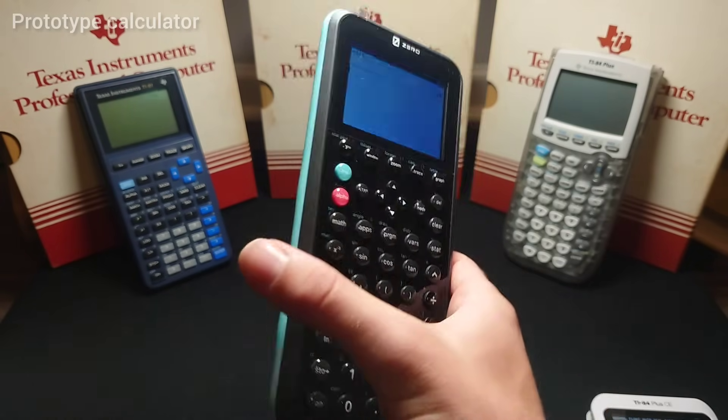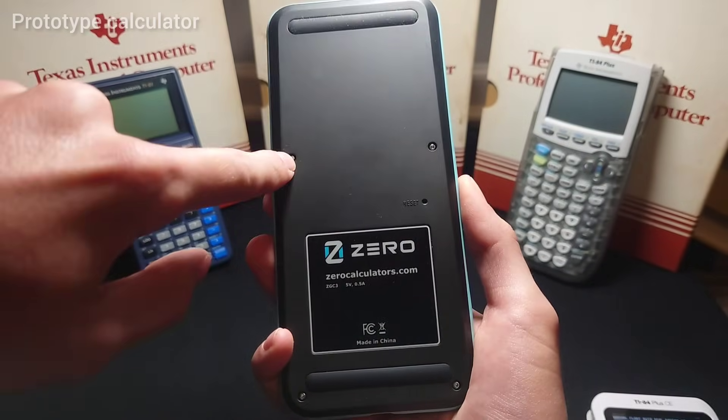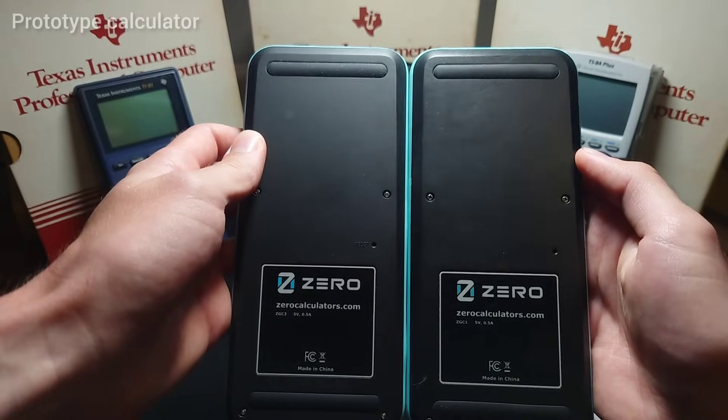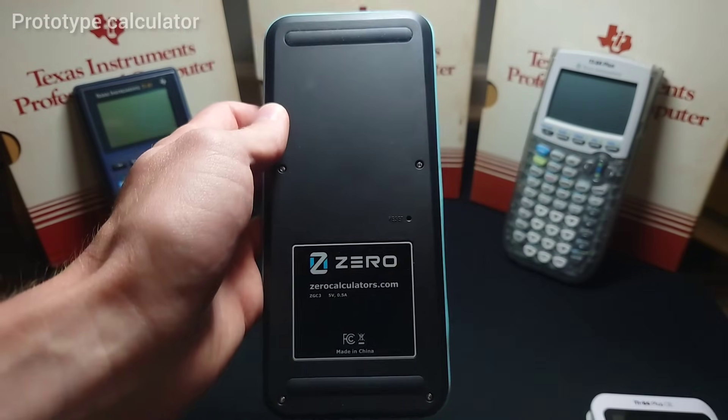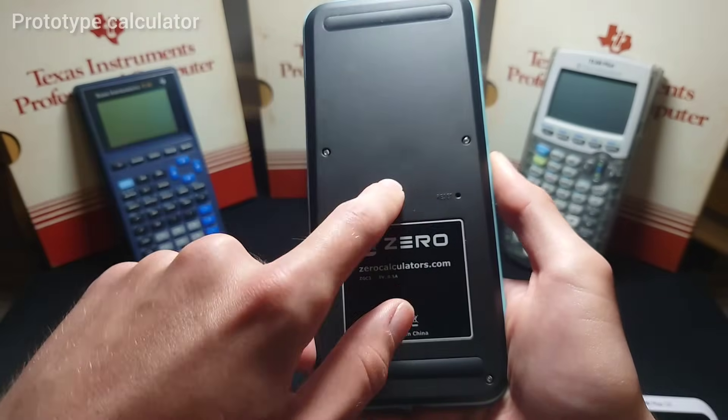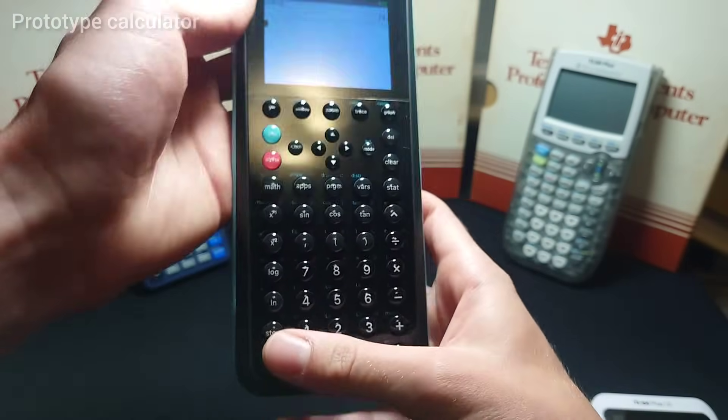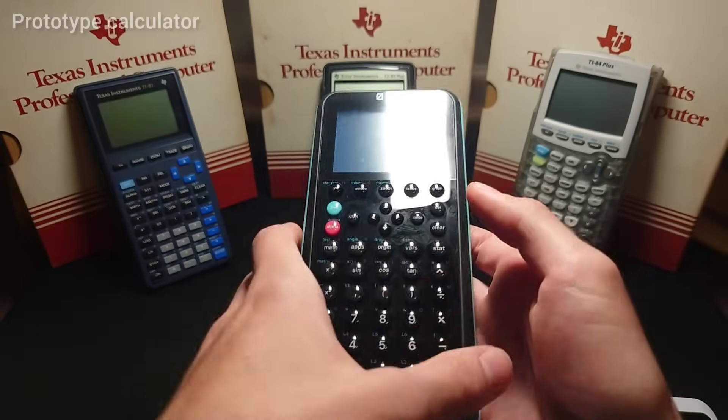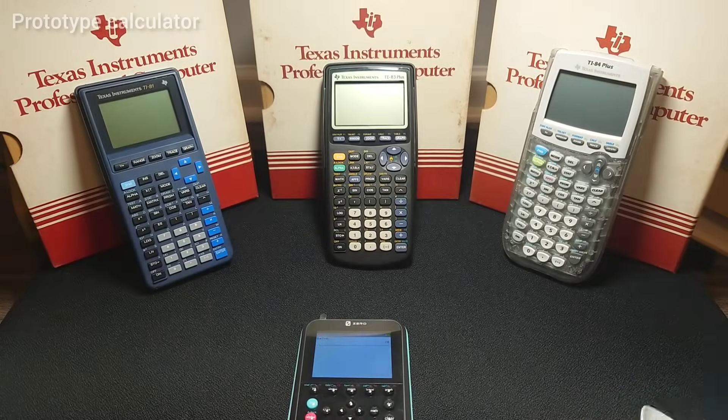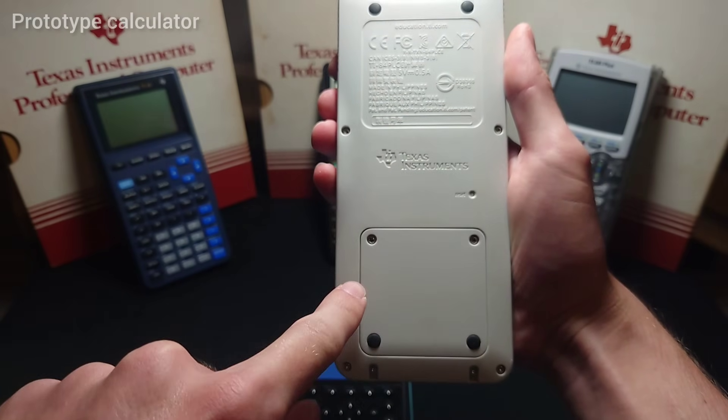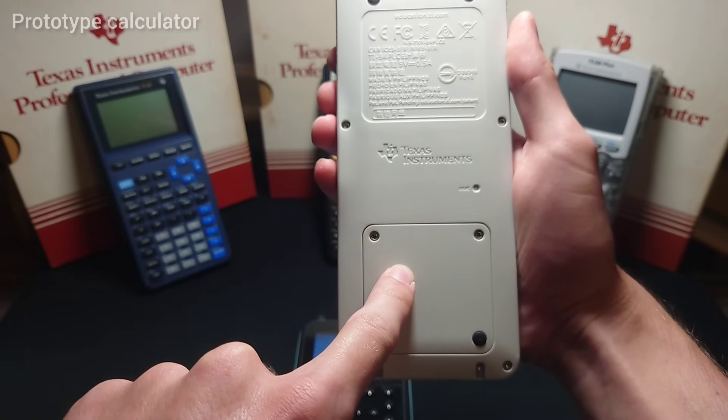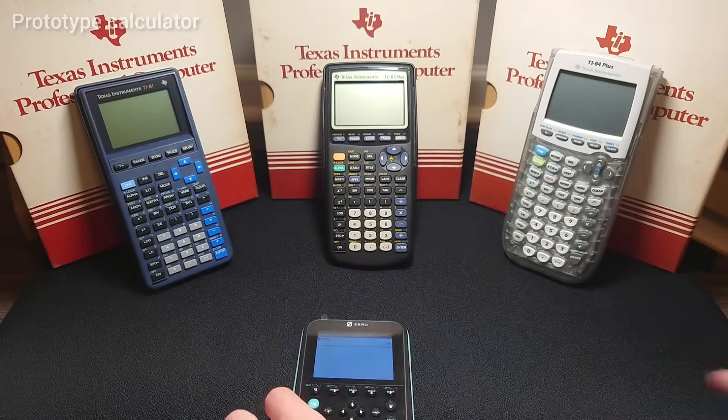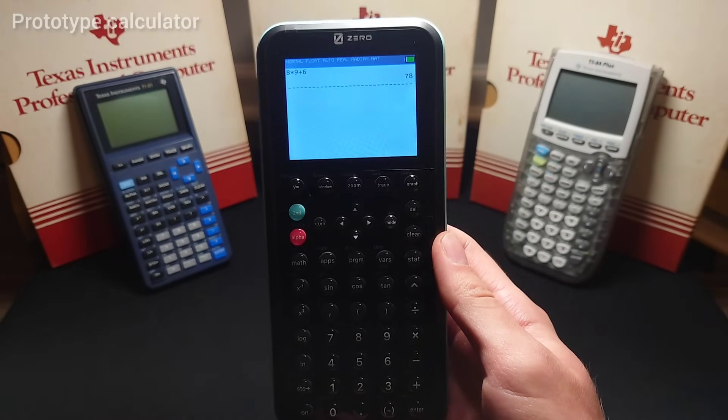The last couple of hardware concerns are that the back, there are hex screws now holding the calculator together. Previously on other zero prototypes, these were Phillips head screws. Now, this just makes battery replacement more difficult when the time comes and the battery has to be replaced. It is rechargeable through that USB-C port. However, all batteries eventually come to an end. On the TI-84 plus CE, there are Torx screws holding the calculator together. However, there are Phillips screws holding the battery door, which is a very common bit and easy to obtain and swap out the battery. I hope to see that addressed on the next calculator revision for Zero.